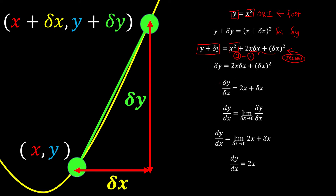Our objective is to find delta y over delta x. So we divide both the left and right hand side by delta x, and delta x over delta x cancels off. This is why we have this expression.